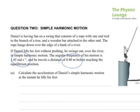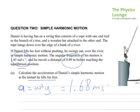Calculate the acceleration of Daniel's simple harmonic motion at the instant he lifts his feet. At the instant he lifts his feet, that is the maximum acceleration, so we can go straight to our equation and put in the max, so the sine component is going to equal 1, so it's omega squared y. If we plug in omega, it was 1.45 radians per second, omega squared, 1.45 squared, times by 0.80, that's going to give us an answer of 1.68 metres per second squared. Just remember it's acceleration.